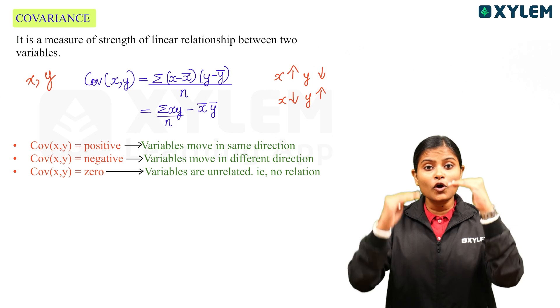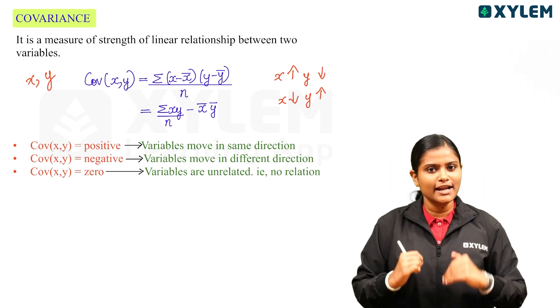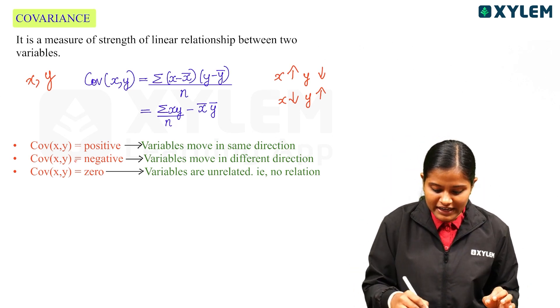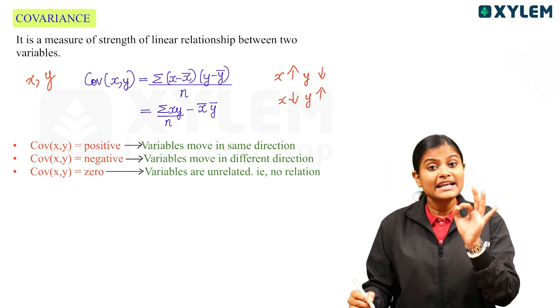If the variables move in the opposite direction, the Covariance is negative.